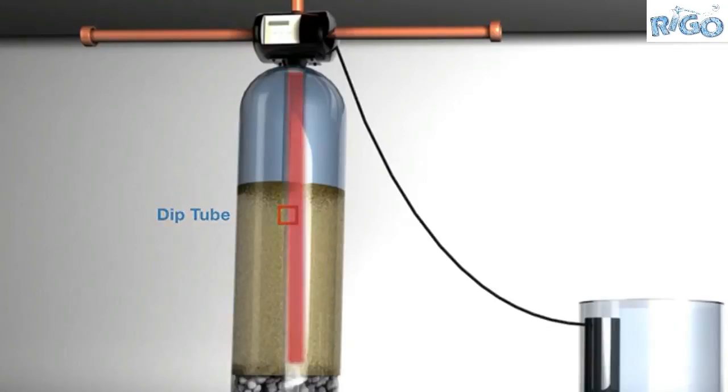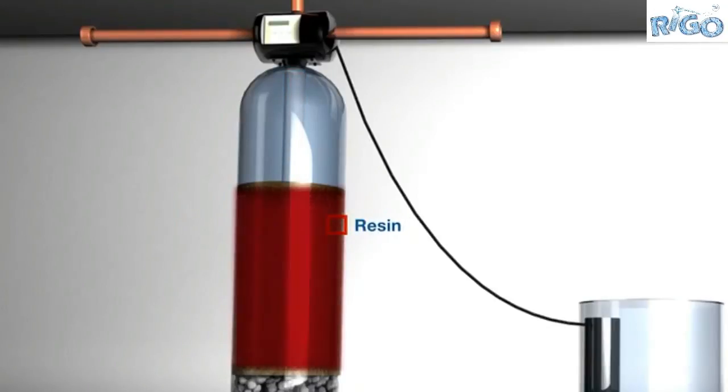The next element in the system is the resin. ProSystems water softeners use Dow's IONX 2000. There are several brands available, but we choose to use IONX 2000 because of its long life and its resistance to chlorine.